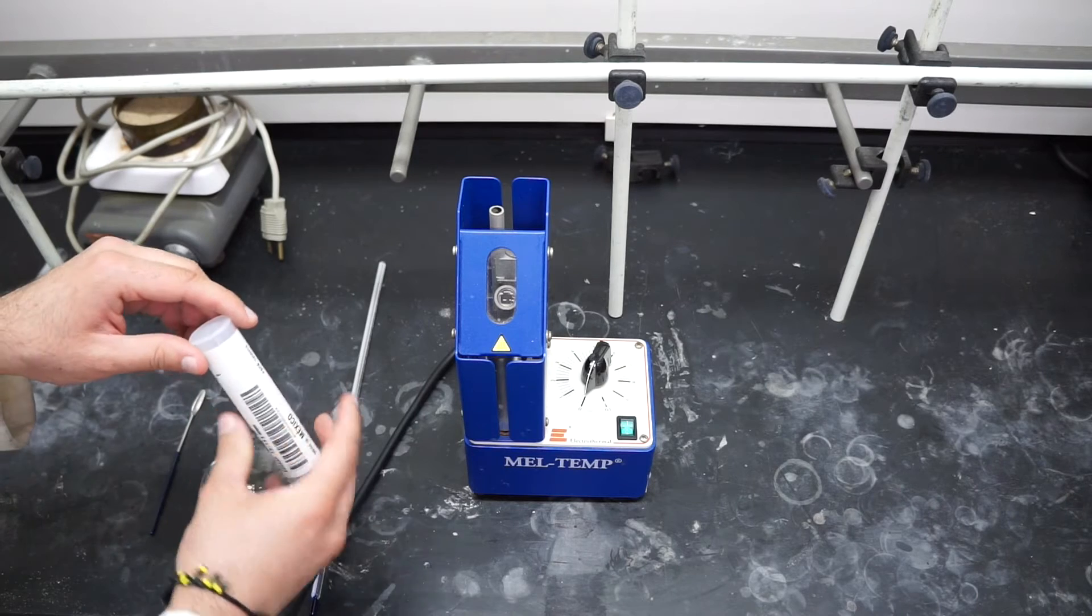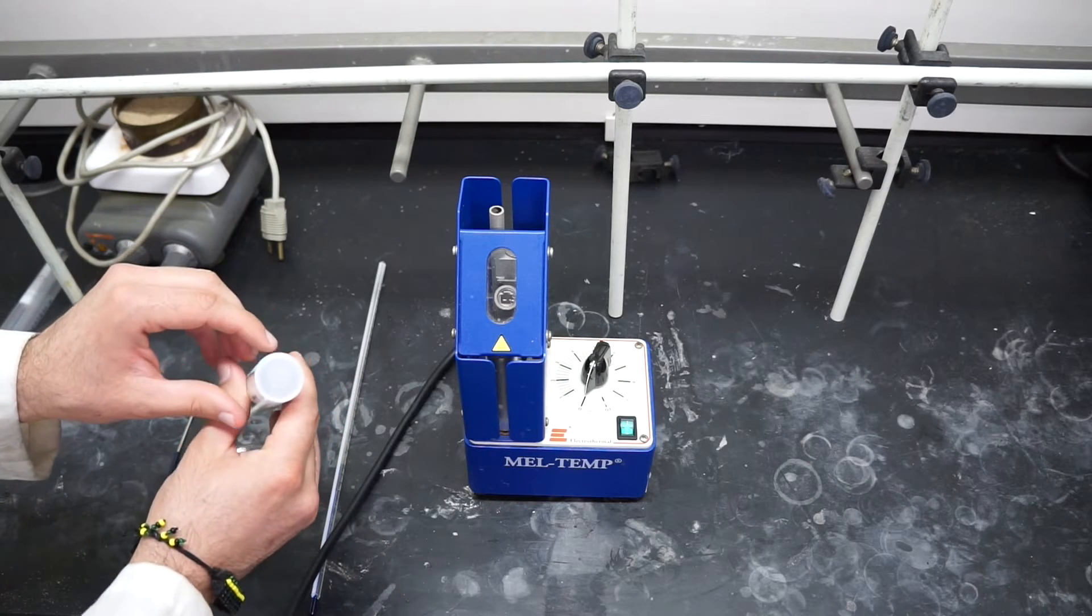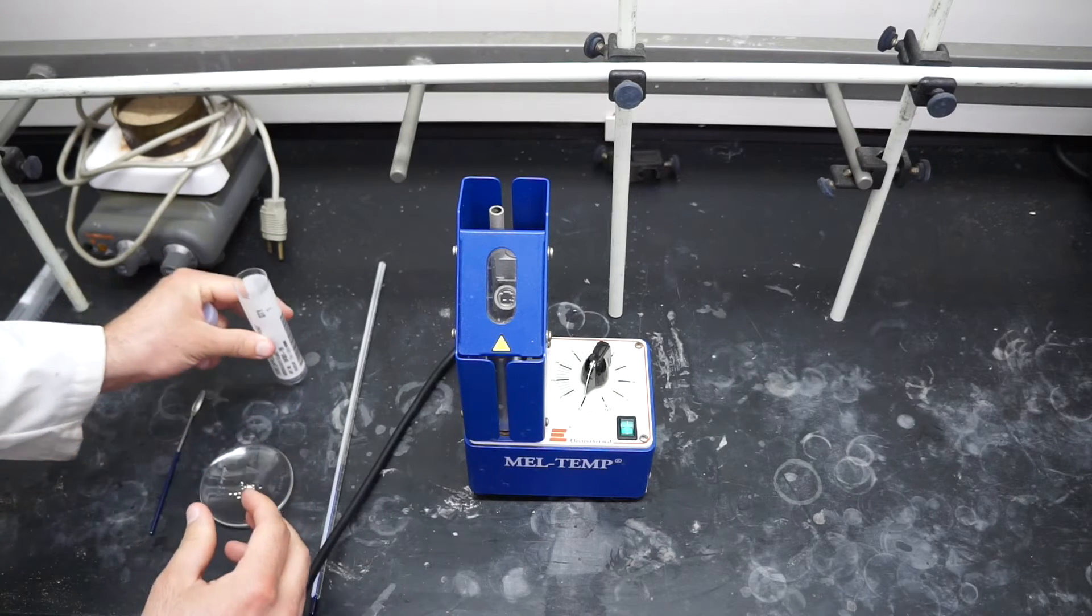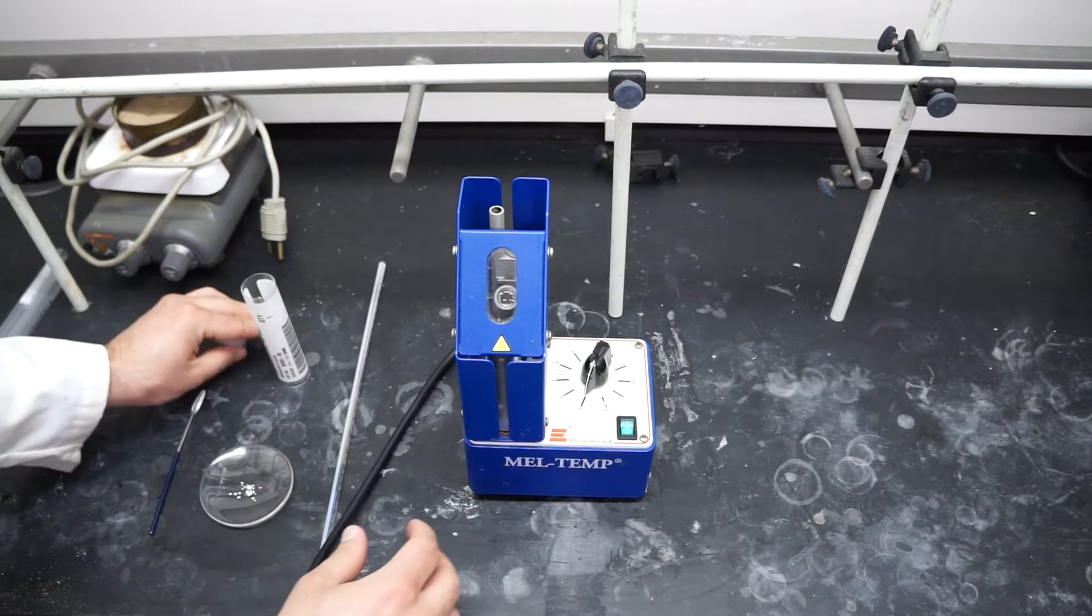And then you will need some capillary tubes. These can usually be found over the sink. You just go ahead, open it up, and there's capillary tubes in there.